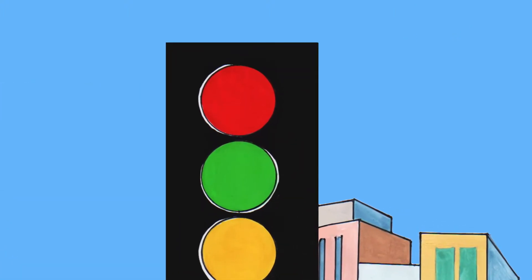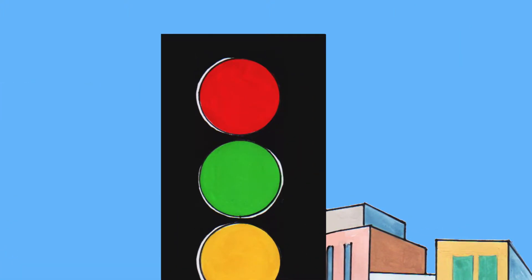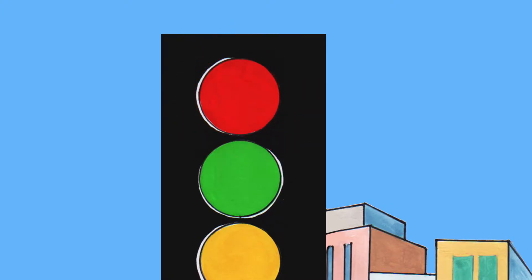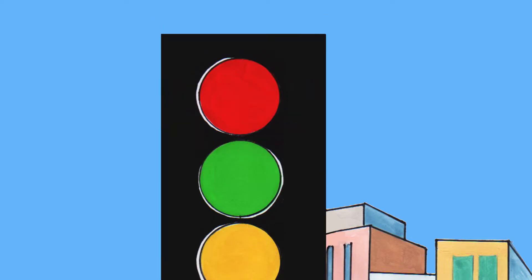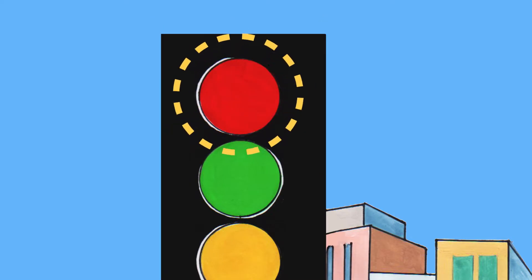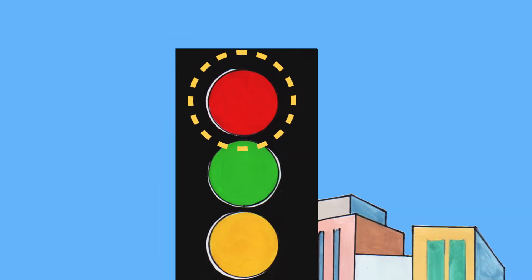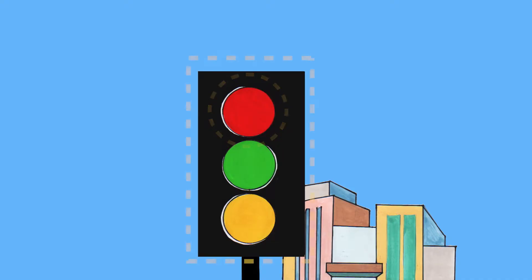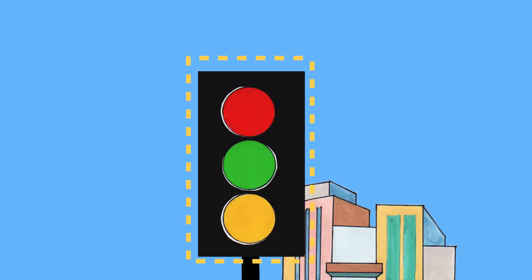There are traffic lights. Can you tell which color is for stop? That's right, red. What's the shape of the light? The red color for stop is a circle. But what about the shape of the whole traffic light? It's rectangular.